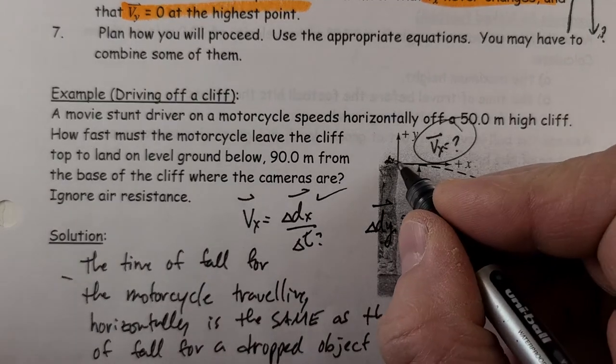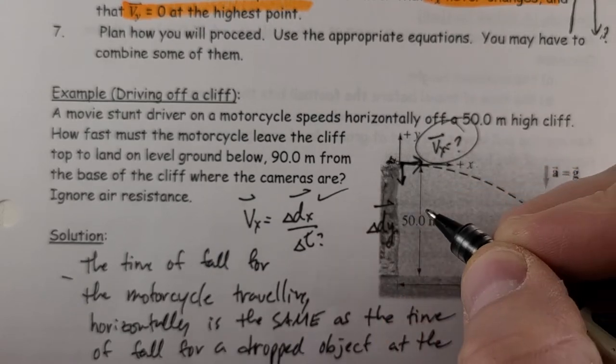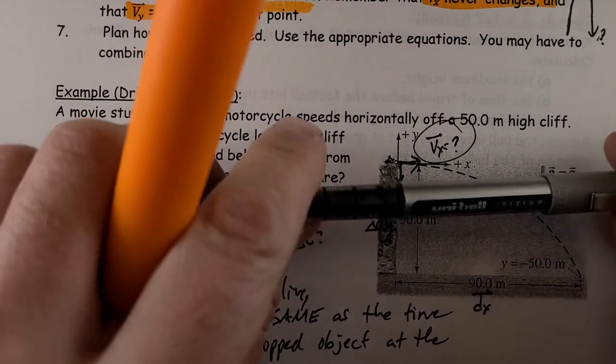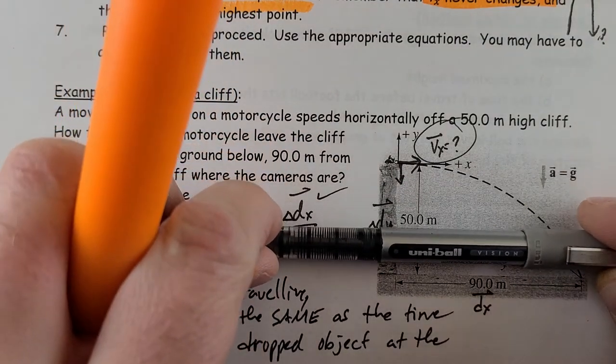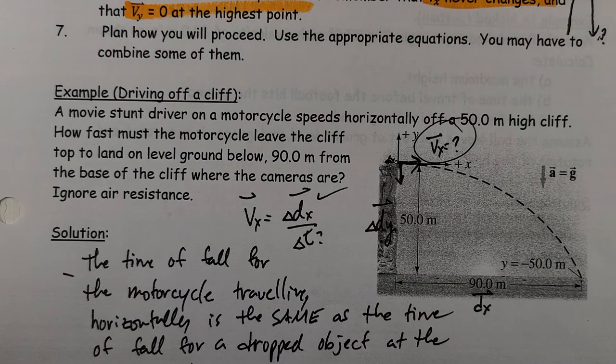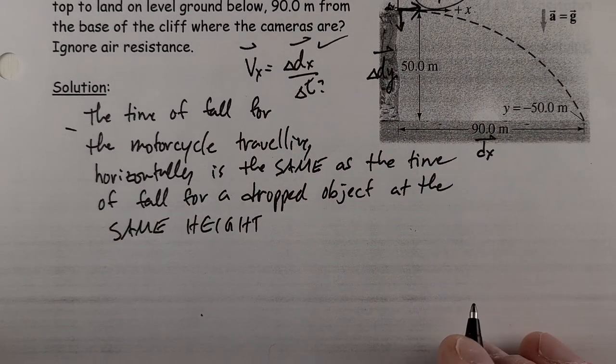Remember, if I launch something this way or if I drop the motorcycle—horizontally or vertically—remember that diagram on the first page analyzing the vertical motion? It's identical. So of course it's much easier to figure out the time of fall for a dropped object than this parabolic shape.